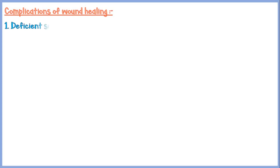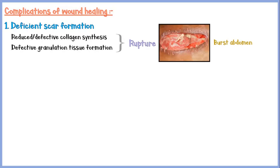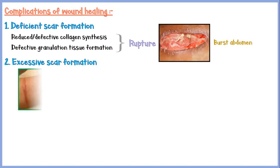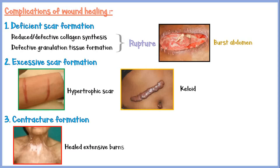Some complications of defective wound healing include deficient scar formation due to reduced or defective collagen synthesis, or defective granulation tissue formation, or both. This may cause rupturing of sutured wounds due to increased pressure inside the body, such as in burst abdomen. Another complication is excessive scar tissue formation, like hypertrophic scars and keloids. Sometimes healing may also result in contracture formation, such as in healed extensive burn injuries.